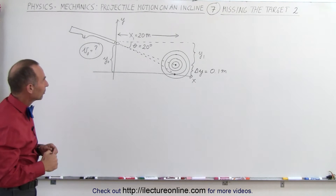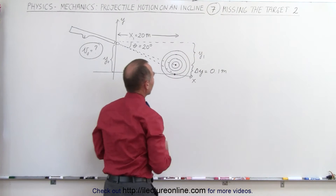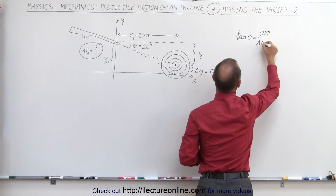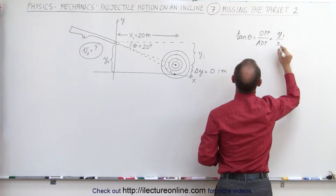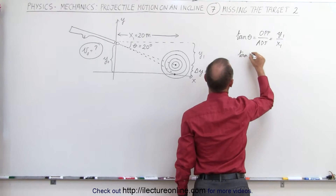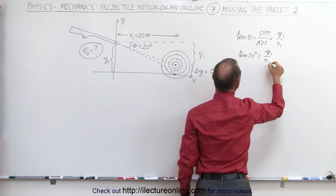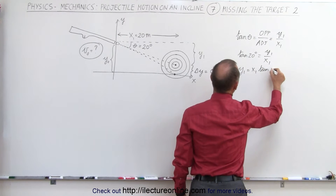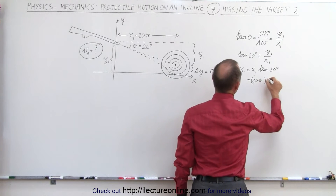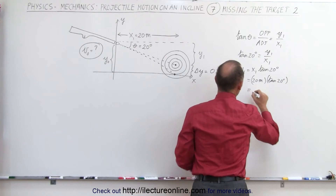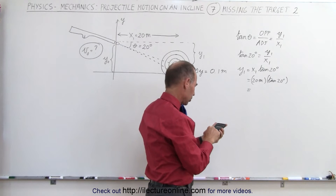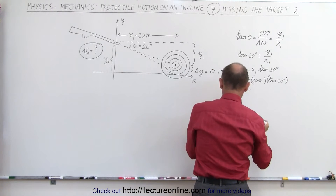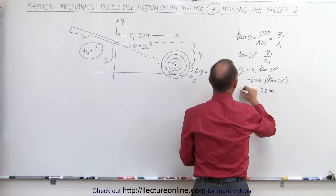First, let's use the tangent to find what y1 is equal to. Notice we can say that the tangent of theta is equal to the ratio of the opposite side over the adjacent side, which in this case would be y1 over x1. Since we know the angle, we can say that the tangent of 20 degrees equals y1 over x1, and since we know x1, y1 equals x1 times the tangent of 20 degrees, which is 20 meters times the tangent of 20 degrees. That gives us 7.28 meters. That's y1.